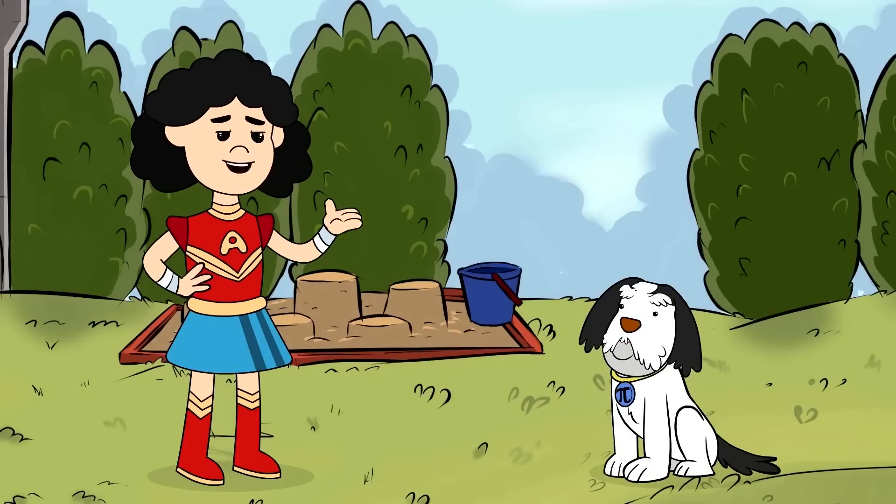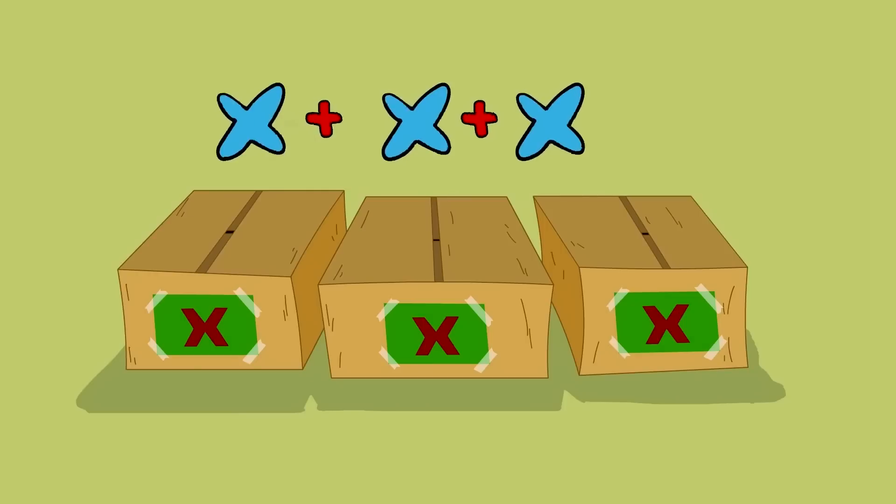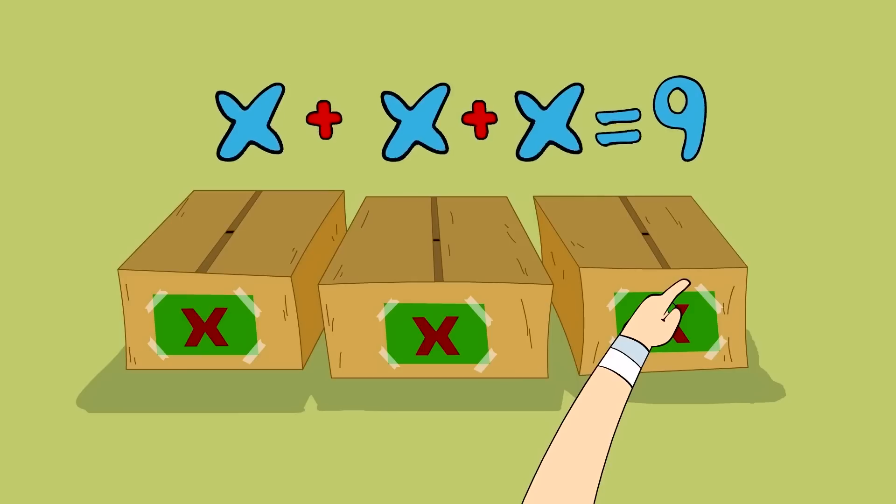Yep. But not just any old math problem. An algebra problem. Awesome! Okay, there's a total of nine treats in three boxes. Each box has the same number of treats inside. A total of nine treats.